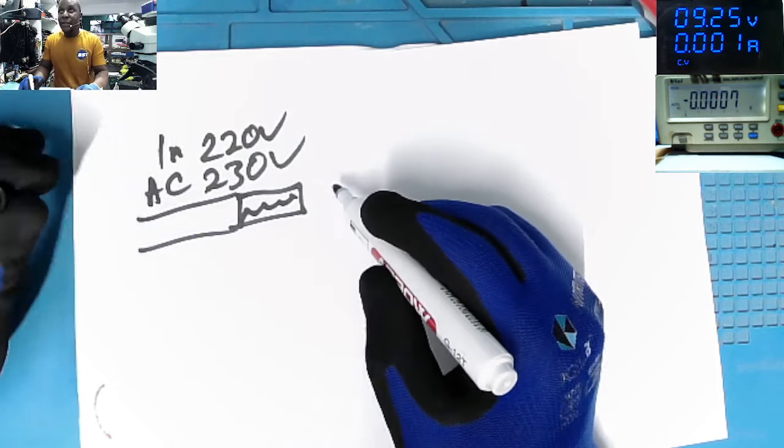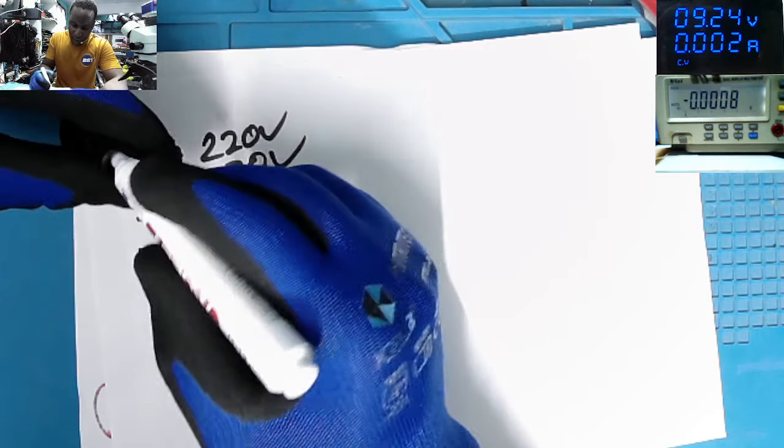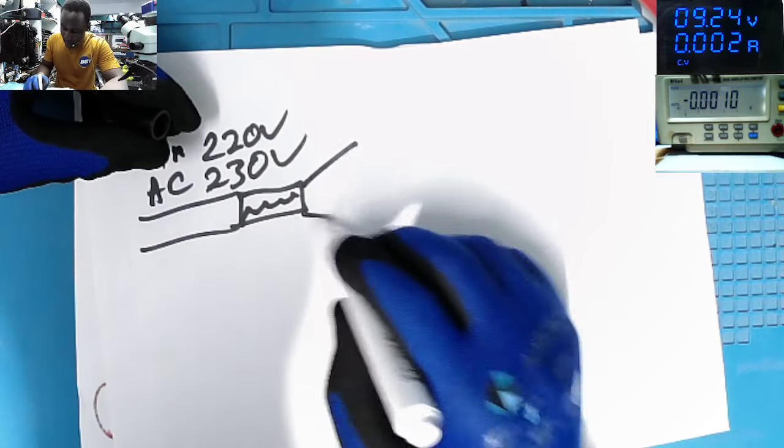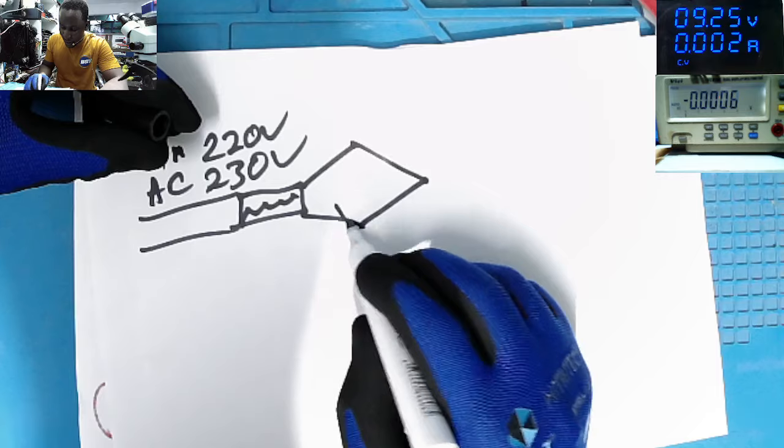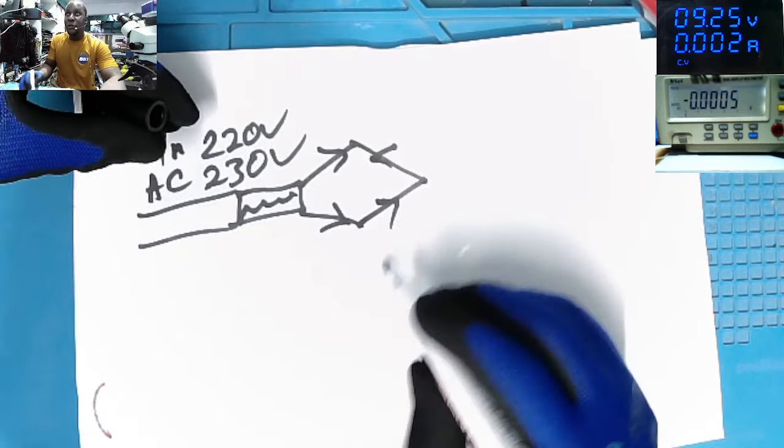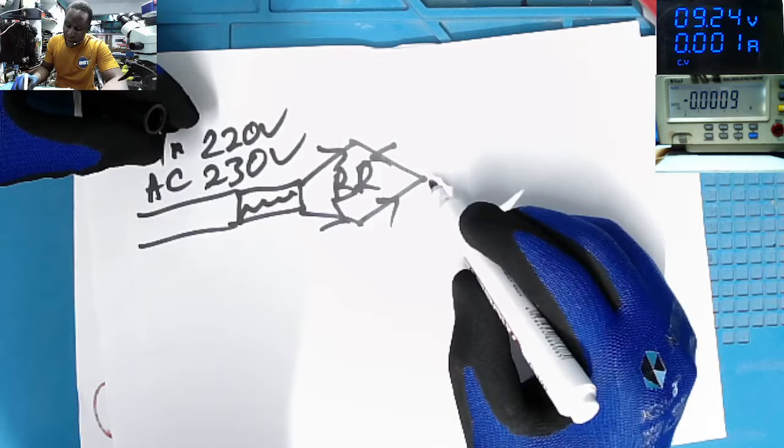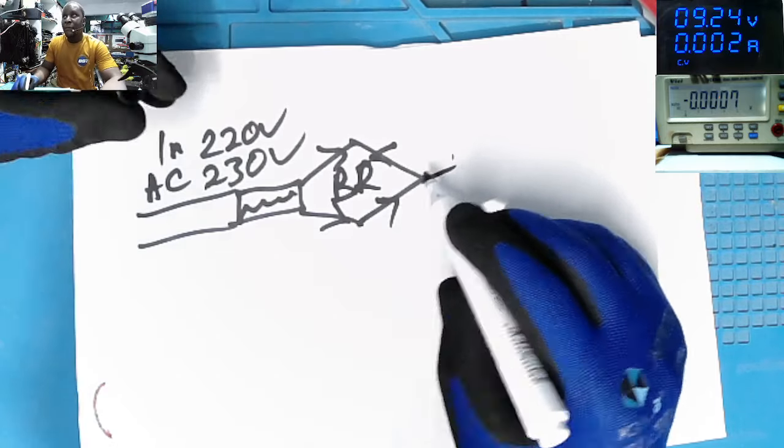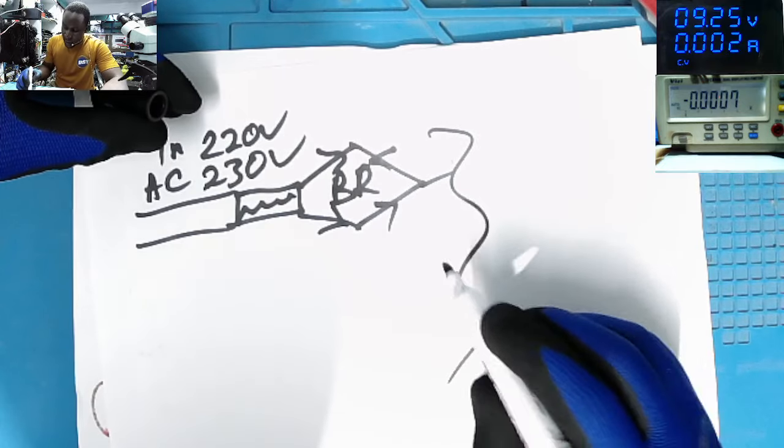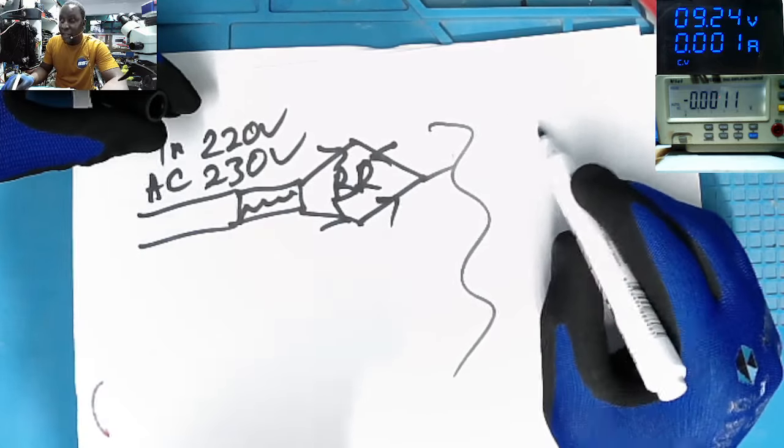After the fuse, where our AC is going, we do have the bridge rectifier. The bridge rectifier, like four diodes which is changing AC to DC. From that, we have the filter capacitor, 400 volts, the primary stage.